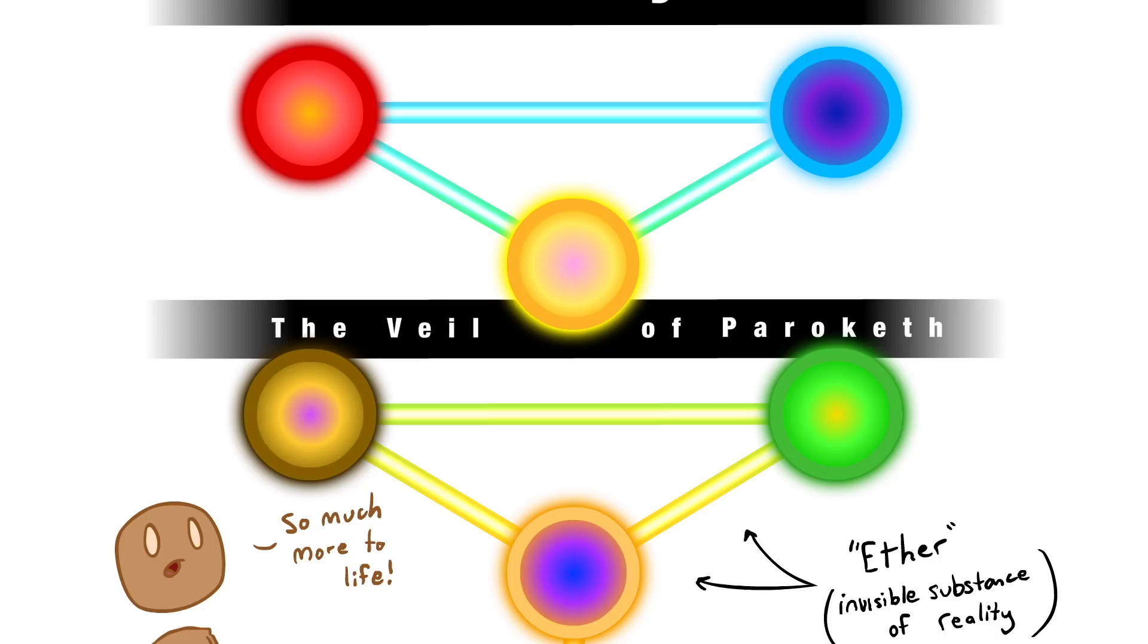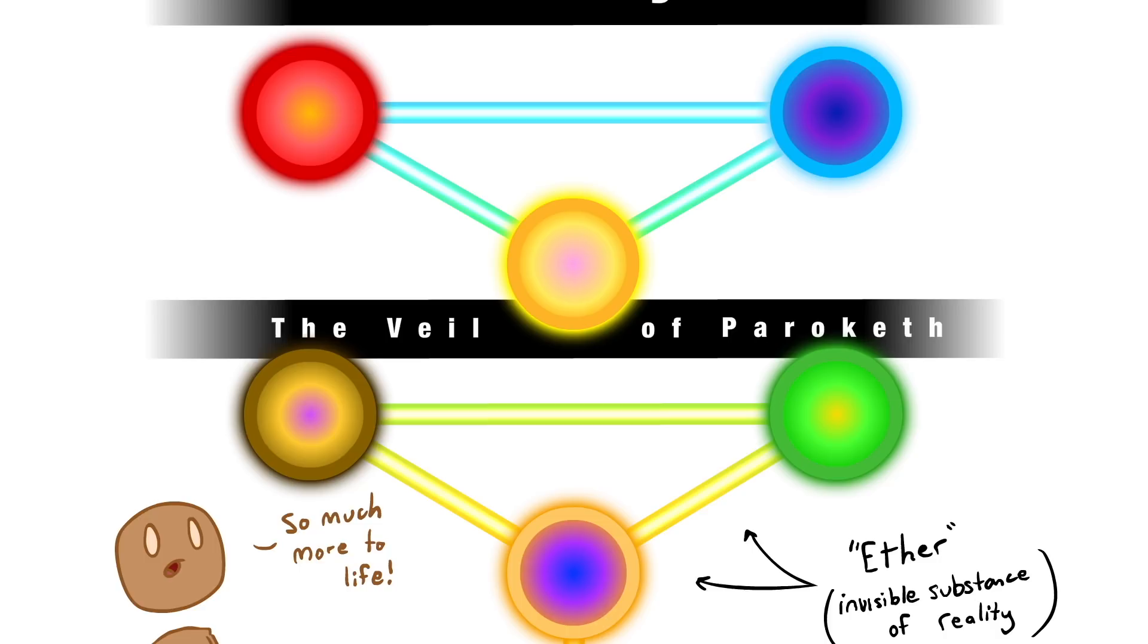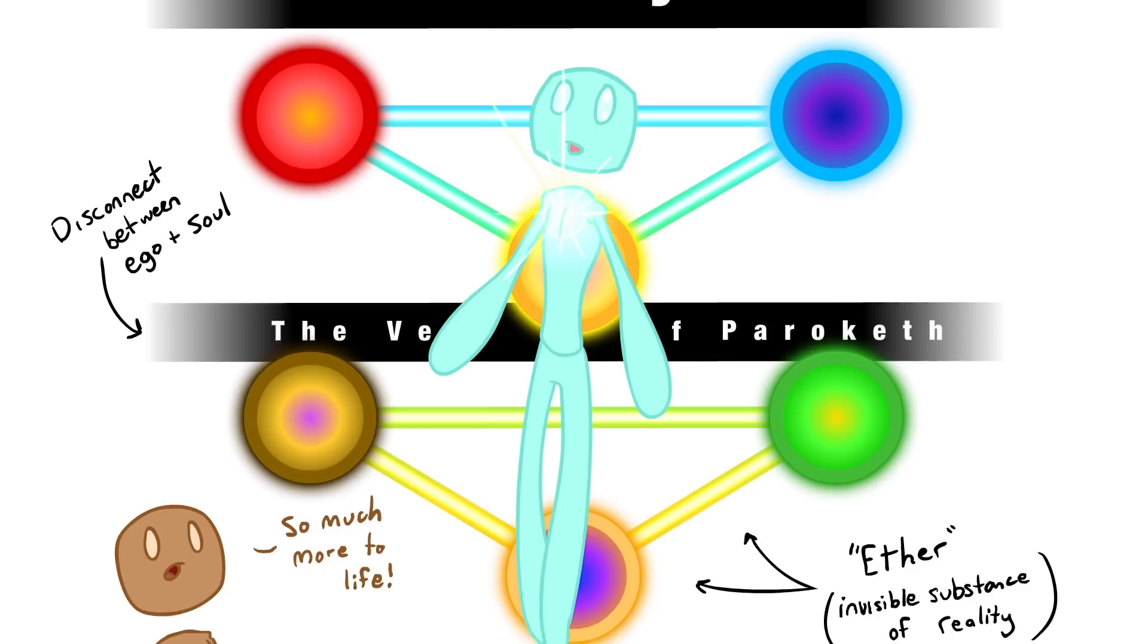The second barrier is called the veil of Paroketh located between the bottom two triangles and represents the disconnect between our soul and our egos. This barrier marks the highest point to which our normal human consciousness can rise without transcendence.